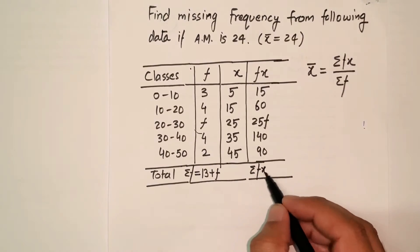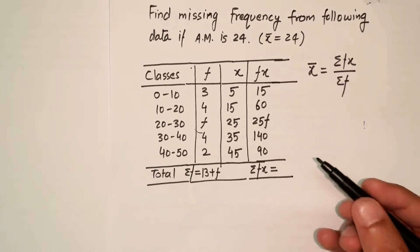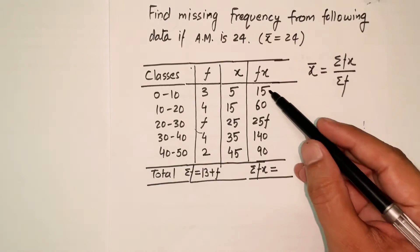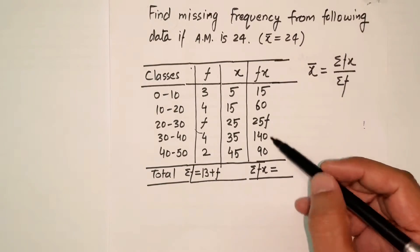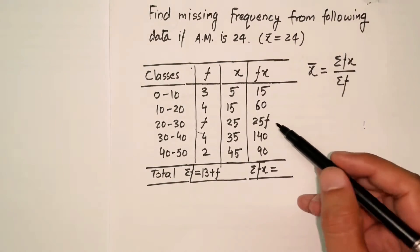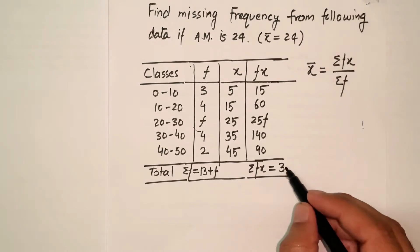Here I'm going to calculate sum of fx. So I'm going to sum 60 plus 15 plus 140 plus 90, and then at the end I'm going to add 25f. So it is going to come out to be 305 plus 25f.